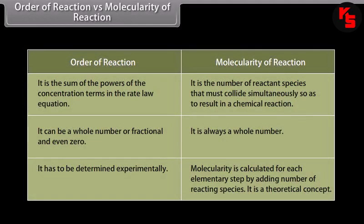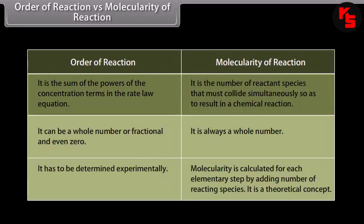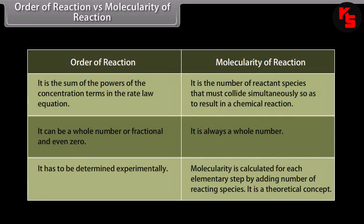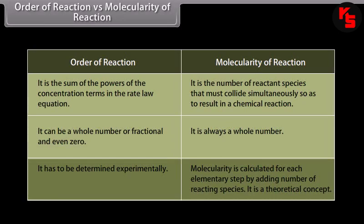The important differences between order and molecularity: order of reaction is the sum of powers of the concentration terms in the rate law, whereas molecularity is the number of reactant species that must collide simultaneously. Order can be a whole number, fractional, or even zero, whereas molecularity is always a whole number. Order must be determined experimentally, whereas molecularity is calculated for each elementary step by adding the number of reacting species; it is a theoretical concept.